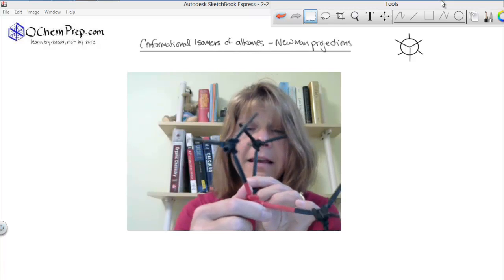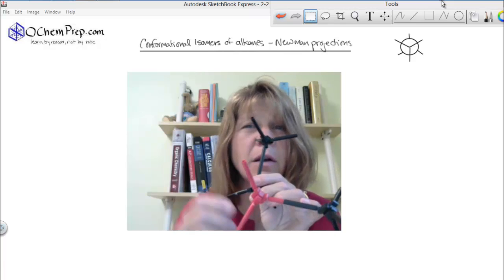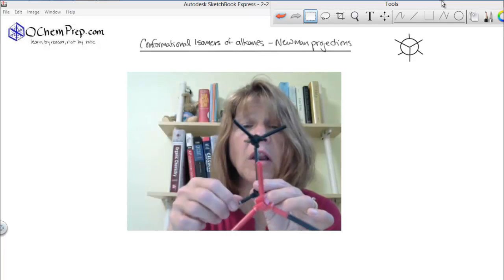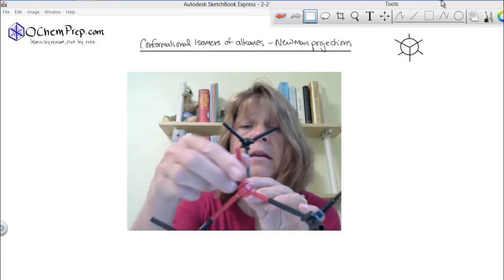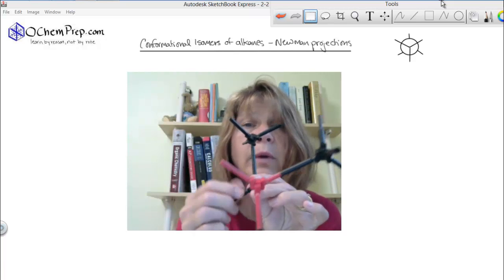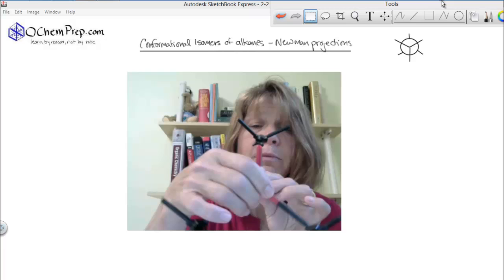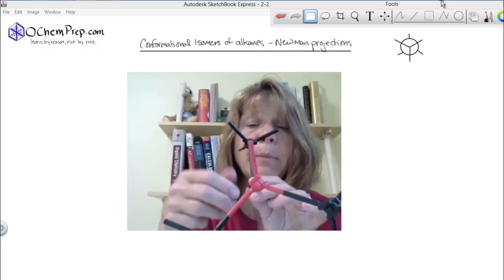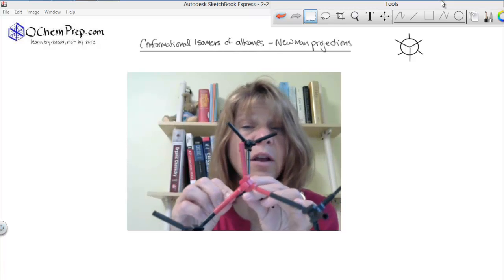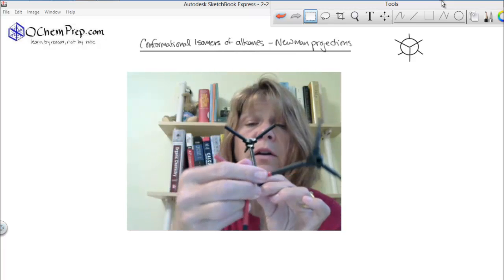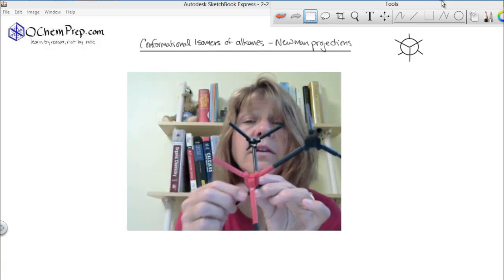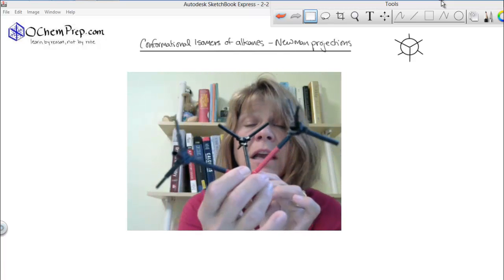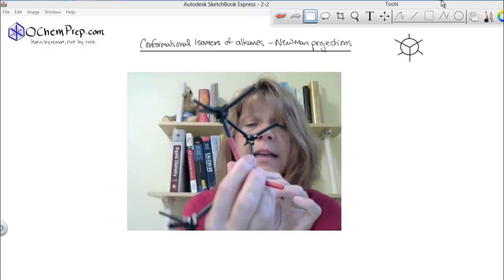When you look at the structure as it rotates, there are really only six interesting structures. When the bonds all line up, that's called eclipsed. When the bonds are in between, that's called staggered. As they rotate, when they're eclipsed, they're higher in energy because the electrons in the bonds are hitting each other. That's called steric interactions. When they're staggered, they're at minimal or lower energy.